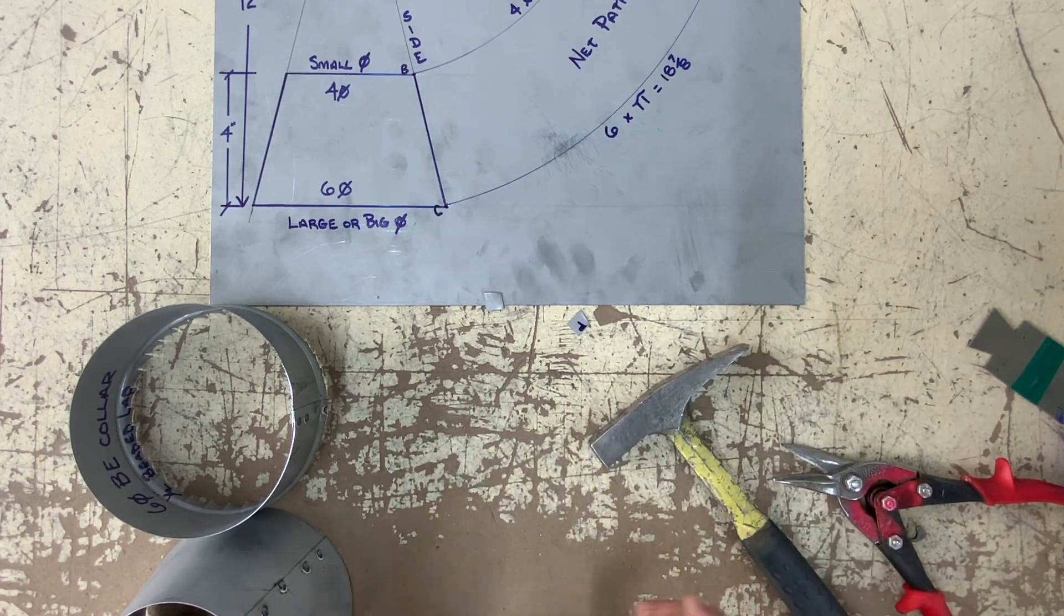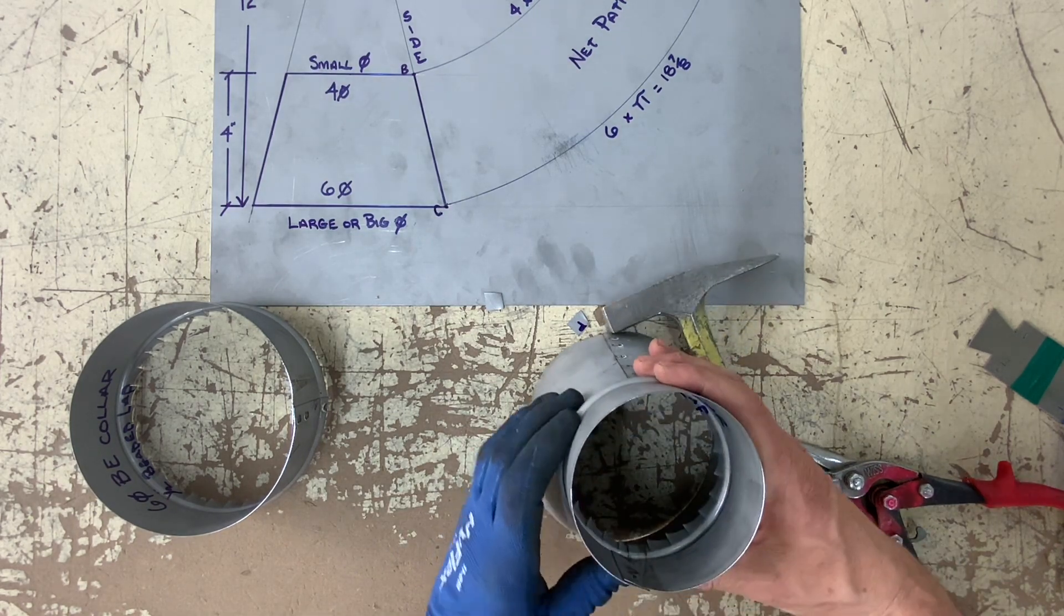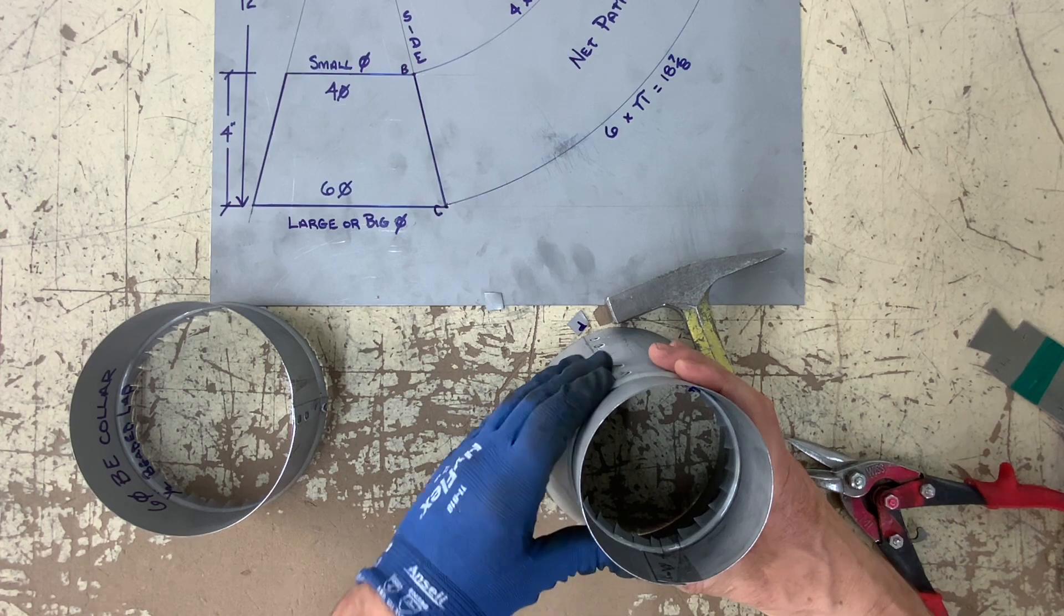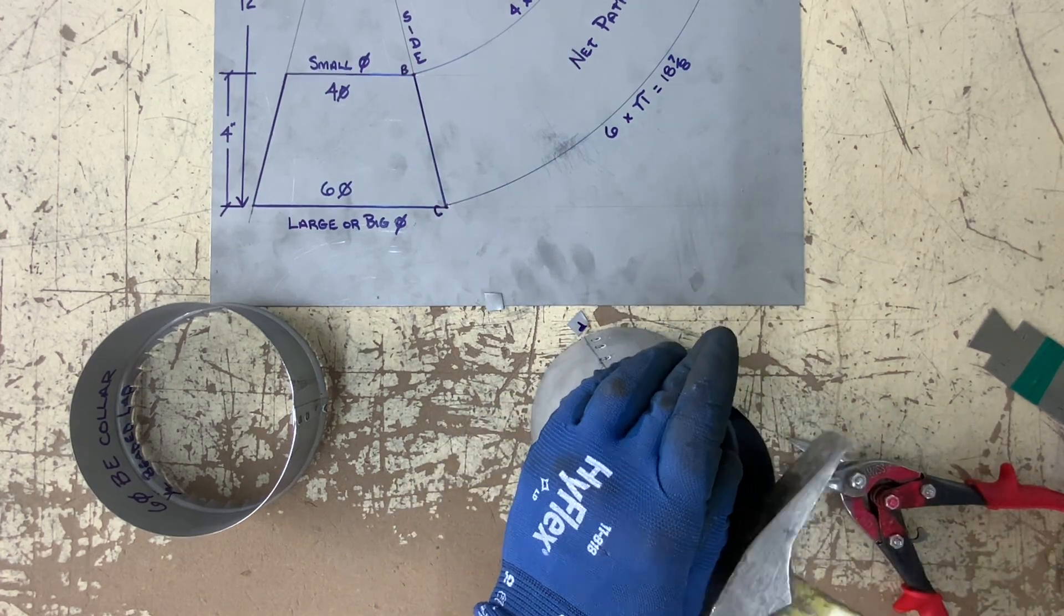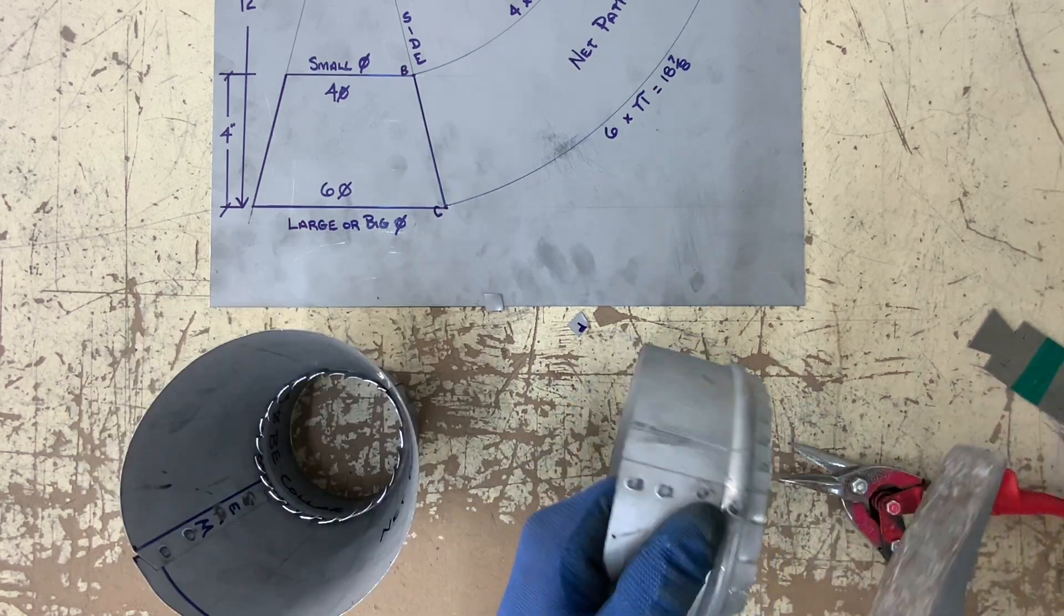I'm simply tapping my tabs a bit in, slightly in, so it fits into the body or the frustrum. Once I know it fits, I can move on and do the same thing to the other.